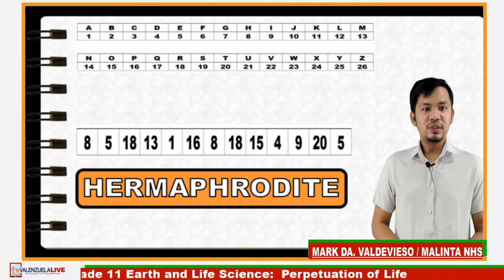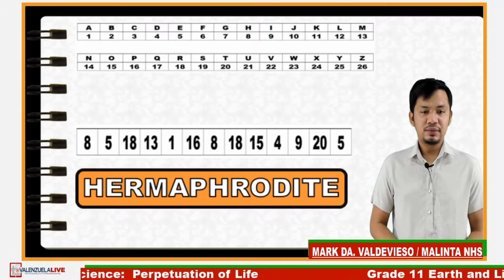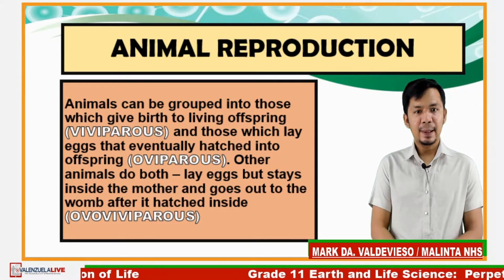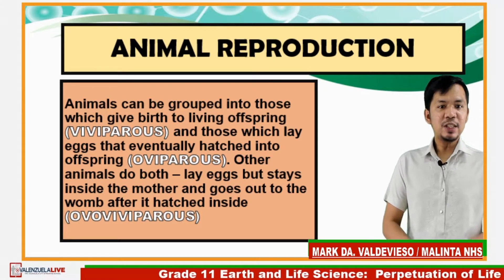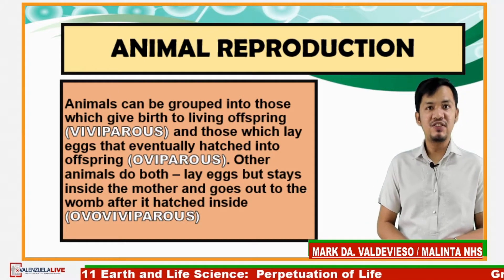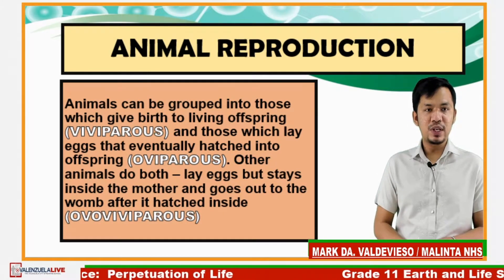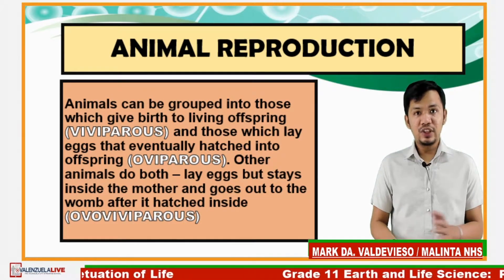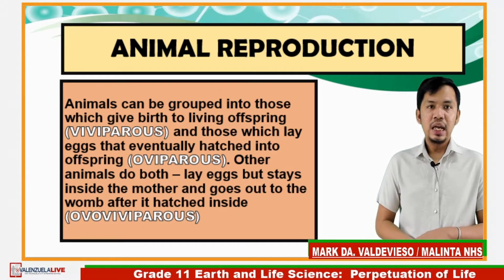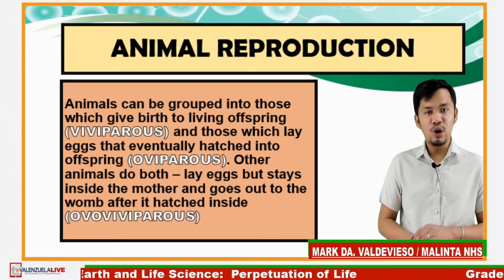Get your notebook, ball pen, and learning module, and let's proceed to our main course. Animals can be grouped into those which give birth to living offspring, which is viviparous, and those which lay eggs that eventually hatch into offspring, which is oviparous. Other animals can do both, wherein they lay eggs that stay inside the mother's womb and come out after hatching inside — we call them ovoviviparous.